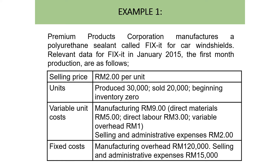Looking at Example 1: Premium Product Corporation manufactures a polyurethane sealant called Fix-In for car windshields. Relevant data for January 2015, the first month of production: selling price RM2 per unit, units produced 30,000, units sold 20,000, beginning inventory zero. Variable unit cost — manufacturing RM9: direct material RM5, direct labor RM3, variable overhead RM1, selling and administrative expenses RM2. Fixed costs — manufacturing overhead RM120,000, selling and administrative expenses RM15,000.